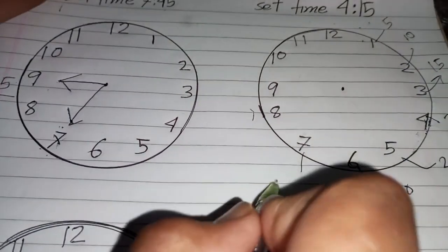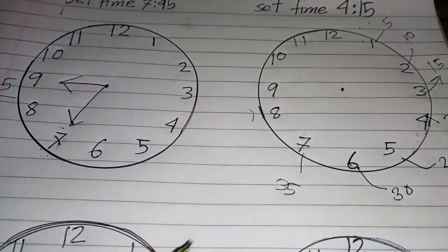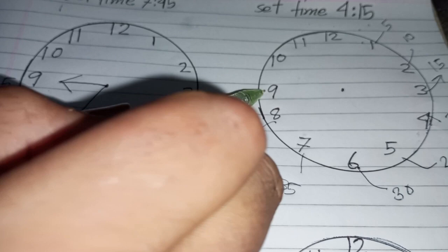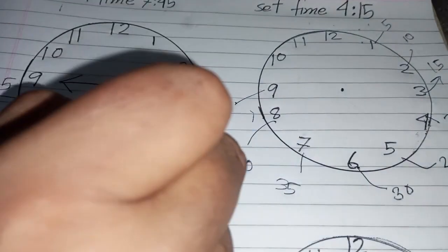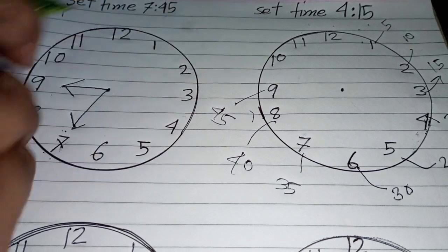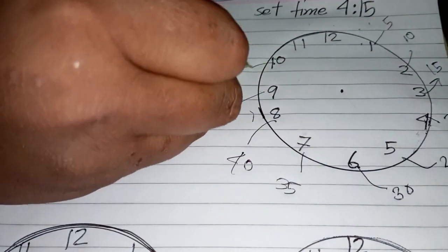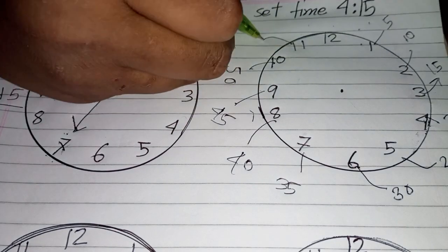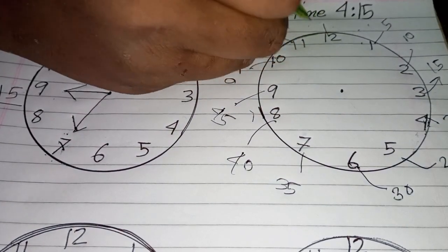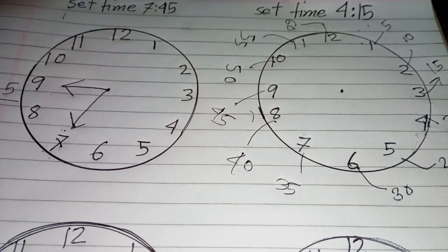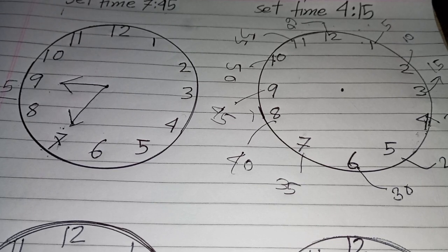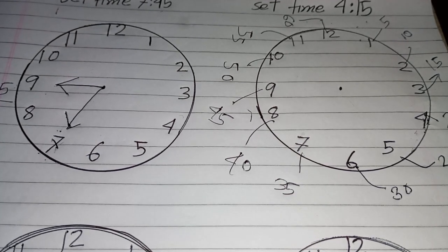7 is 35, 8 is 40, 9 is 45, 10 is 50, 11 is 55, 12 is 60.